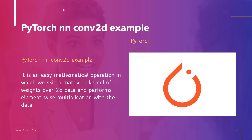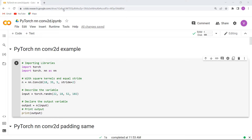Now let's move forward and discuss about PyTorch NN Conv2D example. PyTorch NN Conv2D applies a two-dimensional convolution over an input signal composed of several input planes. It is an easy mathematical operation in which we slide a matrix or kernel of weights over 2D data and perform element-wise multiplication with the data. Now we will understand the concept with the help of an example.